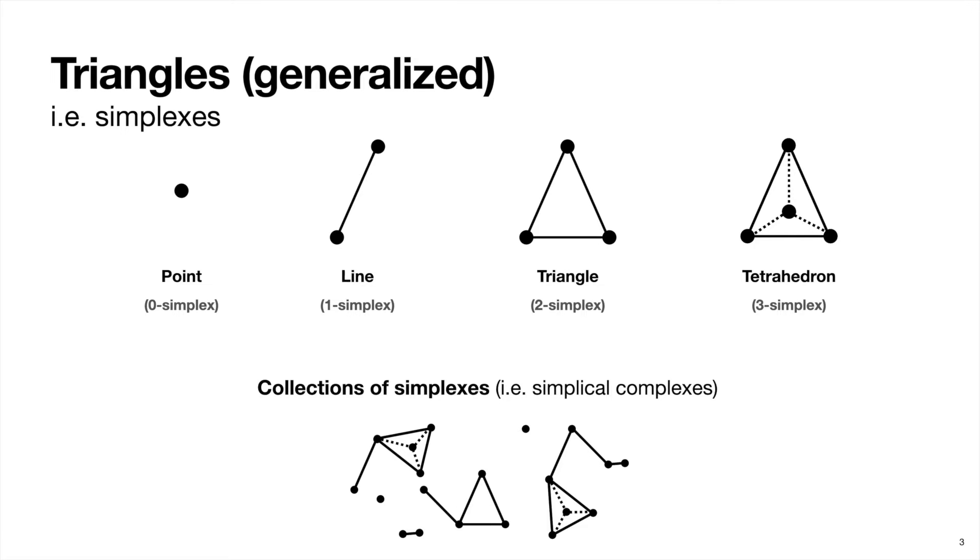Okay, so this gives us a clue as to how we can take unstructured point clouds, in other words, data sets, and translate them into shapes.